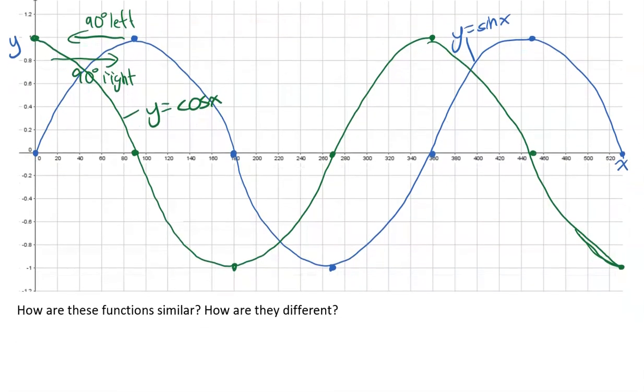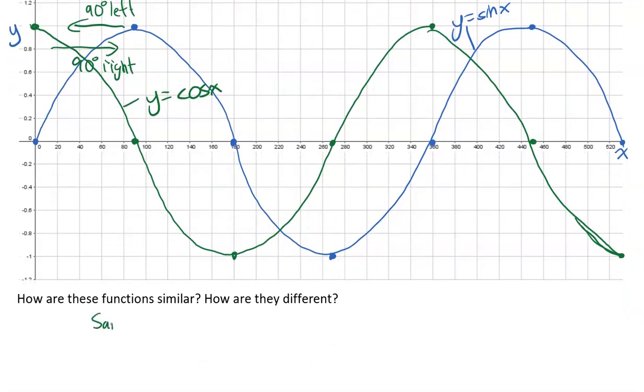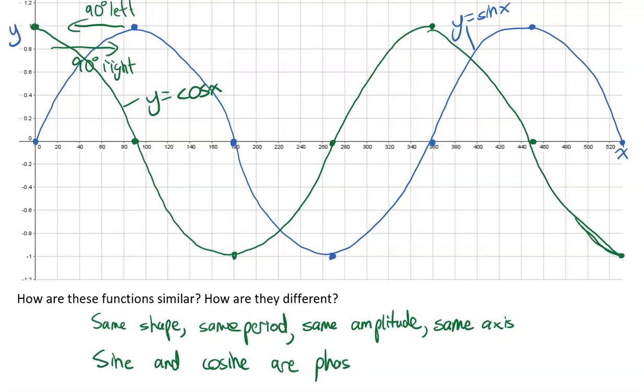So how are these similar? How are they different? Well, the main way that they are similar is they are the same shape. They're also the same period and the same amplitude. We could say it's the same axis as well. The only thing that makes them different is the phase shift. Sine and cosine are phase shifted 90 degrees from one another. That's the graphs.